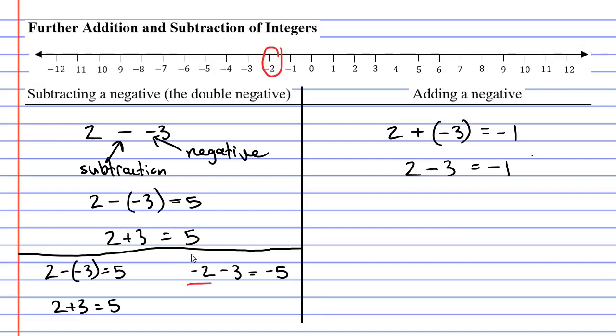And when you minus 3 or subtract 3, it means go to the left, 1, 2, 3, landing on negative 5. So we see that negative 2 minus 3 is equal to negative 5. It's only when the two minus signs are next to each other that they become a positive.